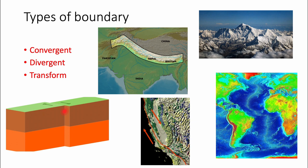A transform boundary is when two plates are sliding past each other. We actually live on a transform boundary — when I graduated pre-K there was actually an earthquake. Many regions that rest on a transform boundary have the most frequent earthquakes. The San Andreas Fault in California is an excellent example: the two plates slide past each other, creating friction and vibration that can produce large-scale earthquakes.